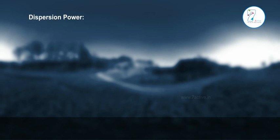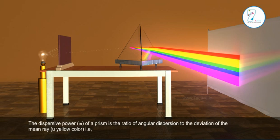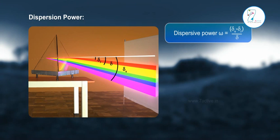Dispersion power: The dispersive power ω of a prism is the ratio of angular dispersion to the deviation of the mean ray for yellow color, that is, ω = (δᵥ - δᵣ) / δ.